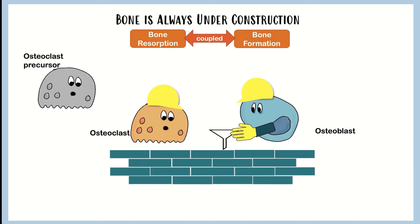So we have to have a constant supply of new osteoclasts coming onto the building site. We have osteoclast precursors that are hanging back in the bone marrow, just chilling out there in reserve, waiting for a signal to know they need to go and start work on the building site.